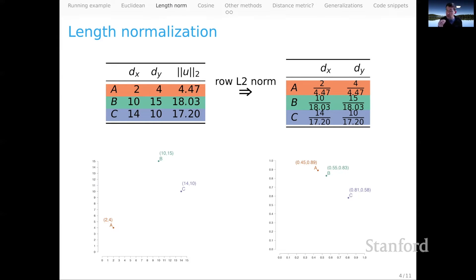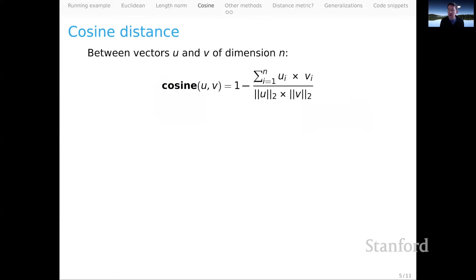If we measured Euclidean distance in this normalized space — just the length of the lines between these points — we would again be capturing that A and B are alike, and B and C are comparatively different. Cosine kind of does all of that in one step.